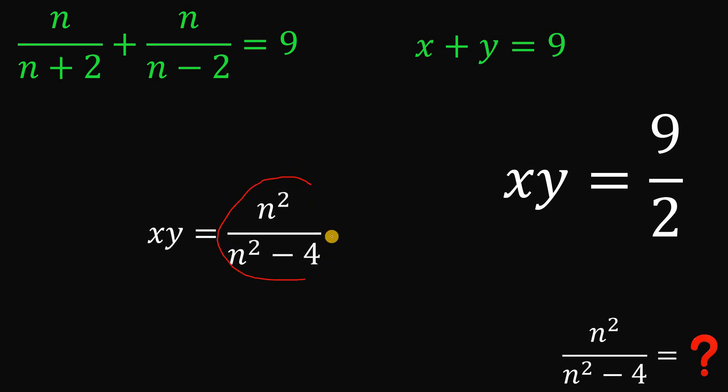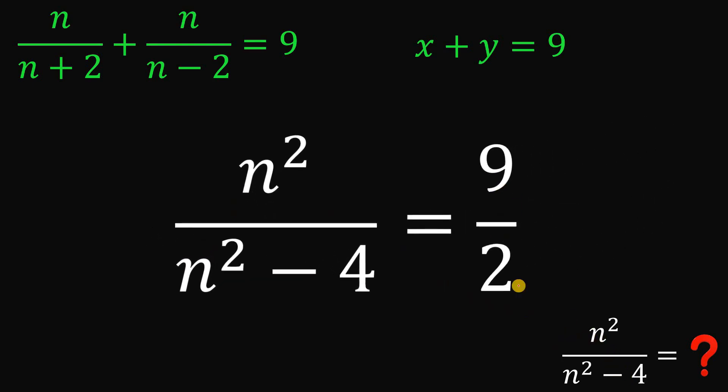And technically speaking, this is the expression that we want to find. And therefore, the value of n squared over n squared minus 4 must be equal to 9 over 2 or simply the product of x and y a while ago.